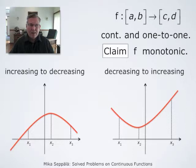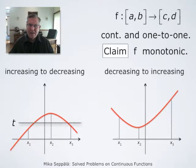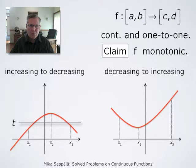Now if we have the situation where f is first increasing and then decreasing — that is, the picture on the left — and we take a value t between the maximum of f(x1) and f(x3), and f(x2), then such a horizontal line intersects the graph of f at two points. This is by the intermediate value theorem.